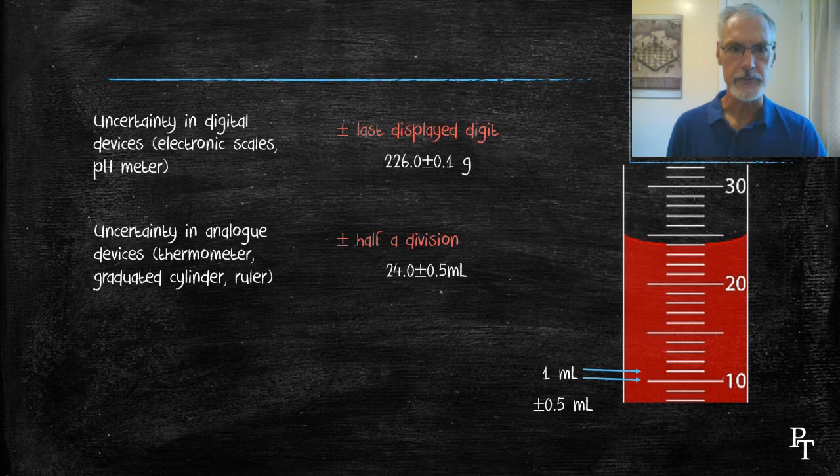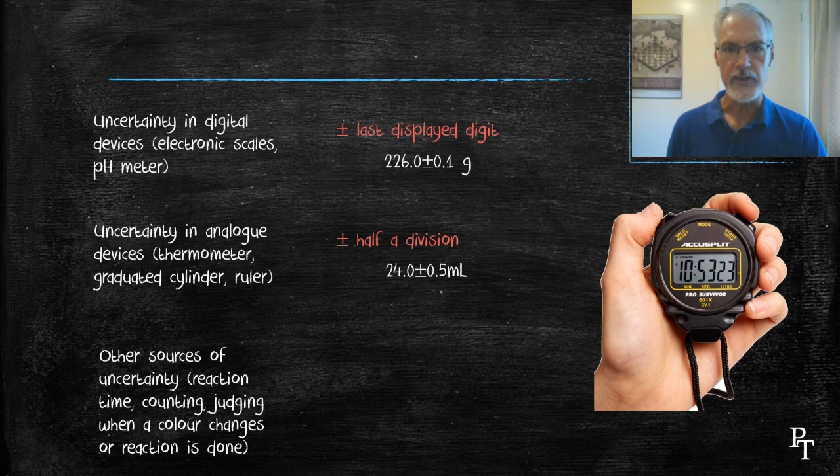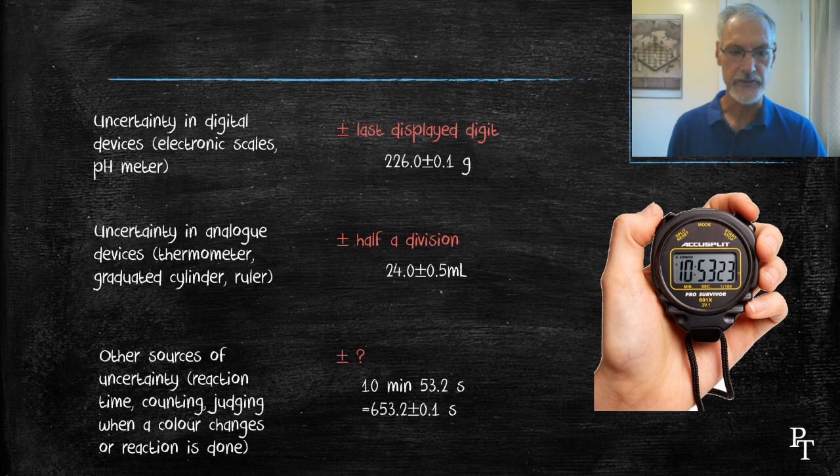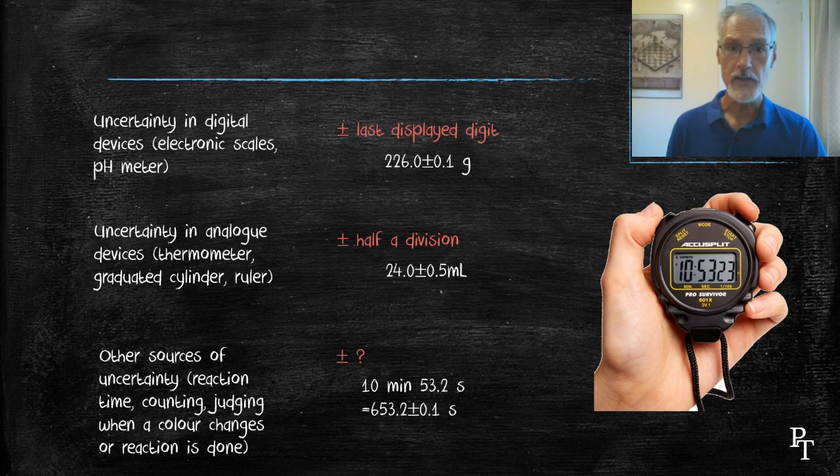Finally, there's other sources of error uncertainty that come about with human reaction time and human judgment. So if I'm using a stopwatch, and it records 10 minutes, 53 seconds, 0.23, human reaction time is usually generally only good to a tenth of a second. So I should record 10 minutes, 53.2 seconds. Converting that all into seconds, 553 plus or minus 0.1 seconds.